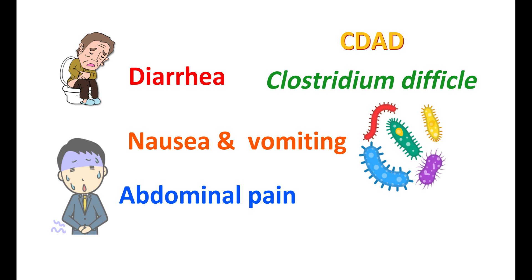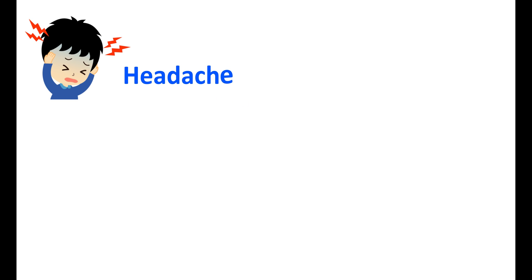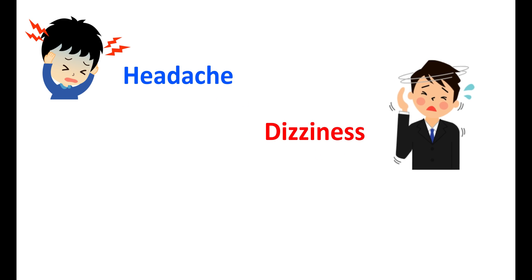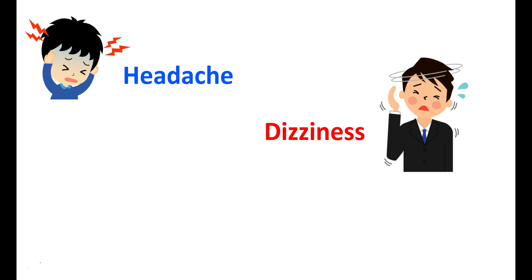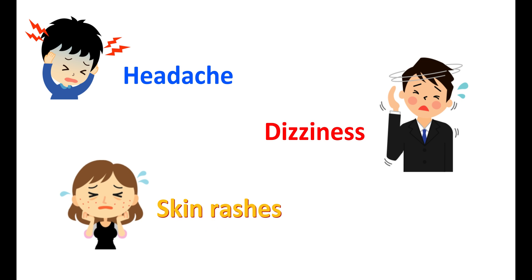This may result in severe diarrhea and abdominal pain, and can also induce nausea and vomiting. Other side effects of ciprofloxacin are mainly observed on the CNS — it can produce headache, dizziness, and skin rashes. However, many of these side effects are mild, and the diarrhea can be controlled by taking probiotics along with ciprofloxacin.